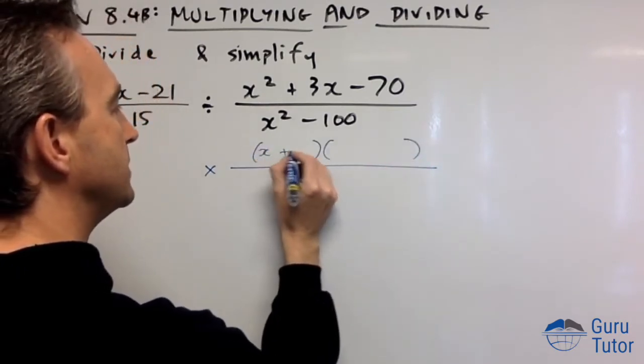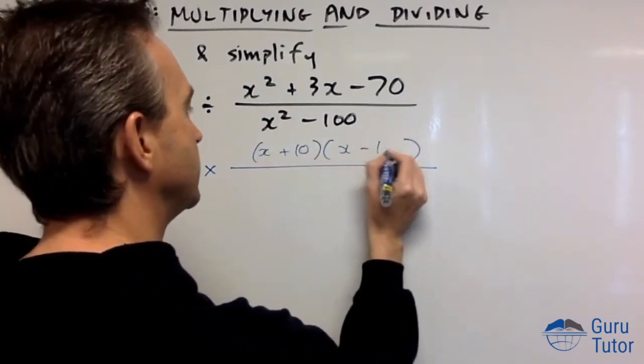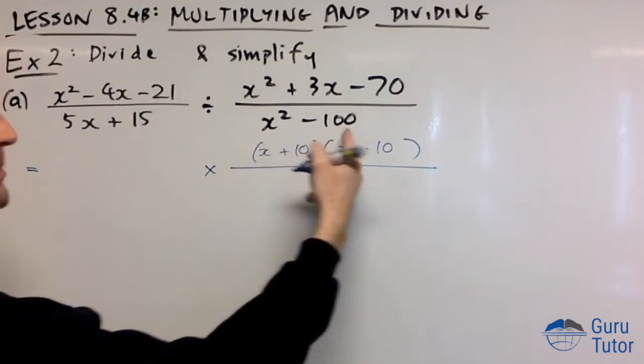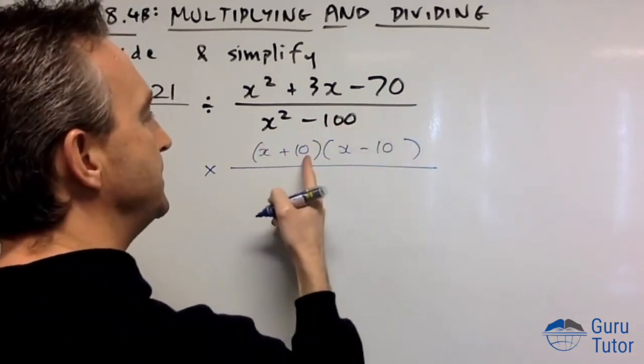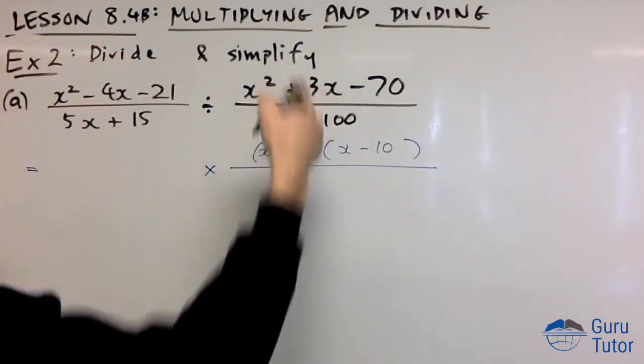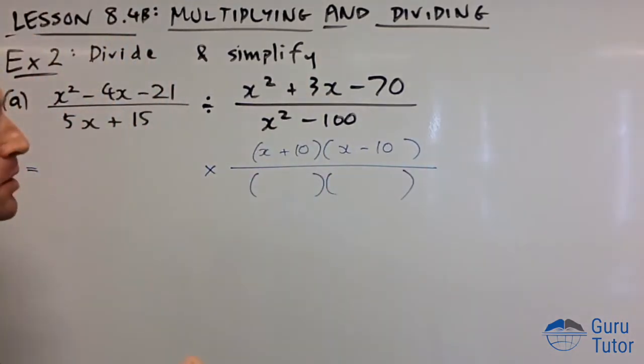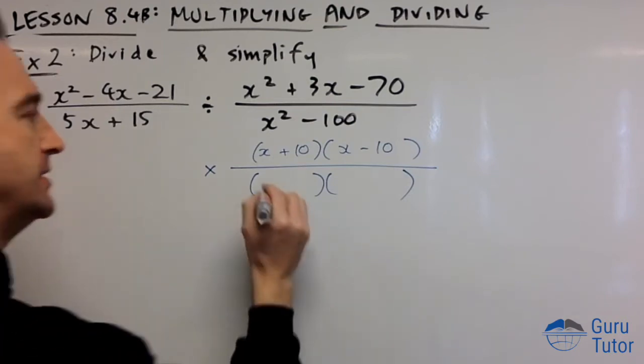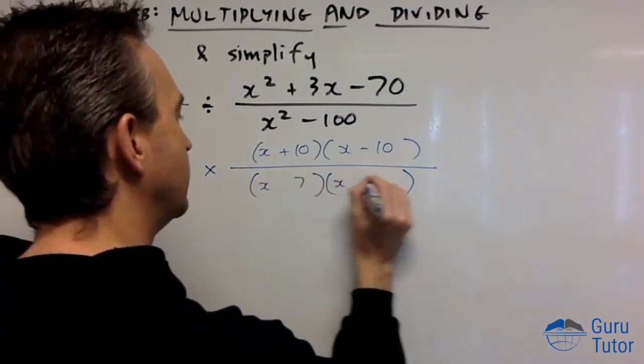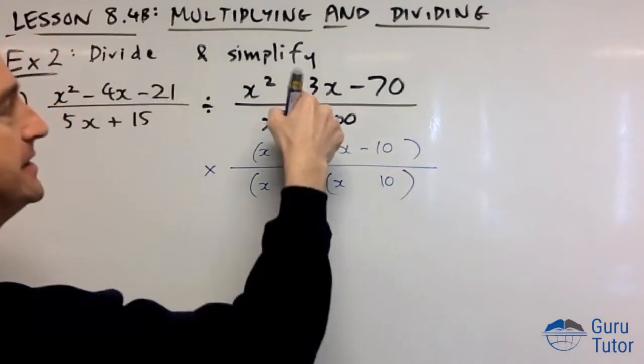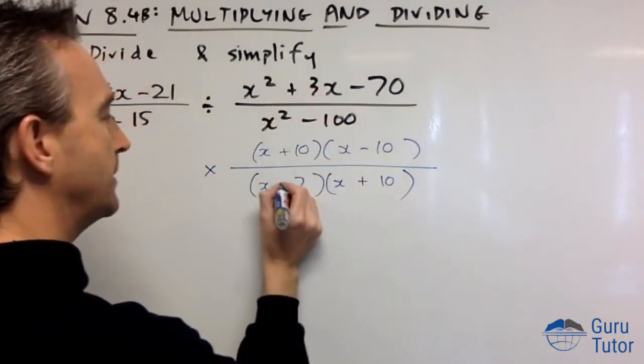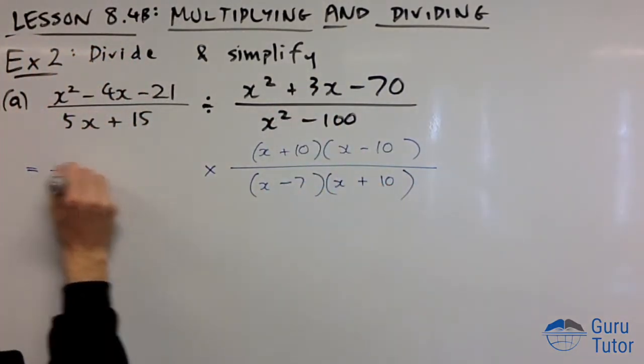a²-b² factors to (a+b)(a-b). This will go on the bottom. Can that be factored? Two numbers that multiply to give 70 and have a difference of 3? Yes: 7 and 10. 7×10 add to give +3, so it's (x+10)(x-7).